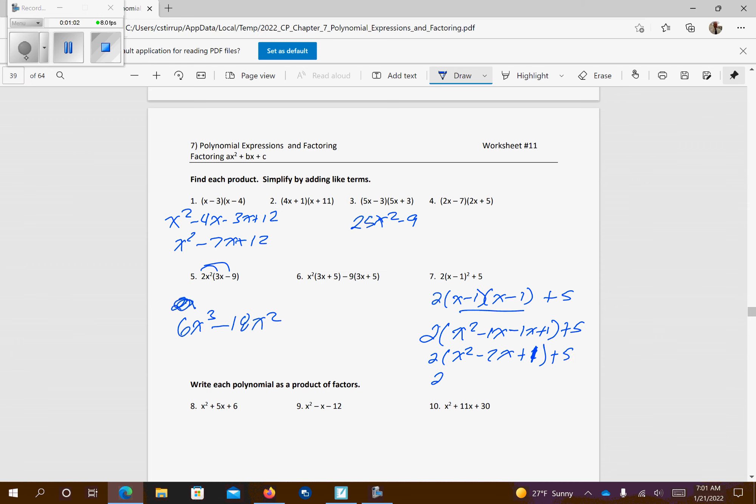Distribute the 2 over the parentheses, so I'm going to get 2x squared minus 4x plus 2, and we have that plus 5, and those are like terms. So we're going to get 2x squared minus 4x plus 7.